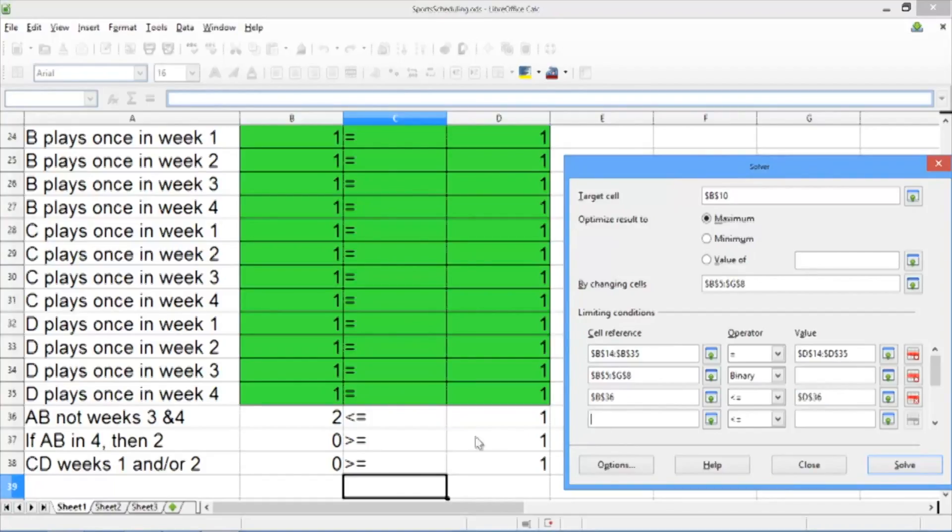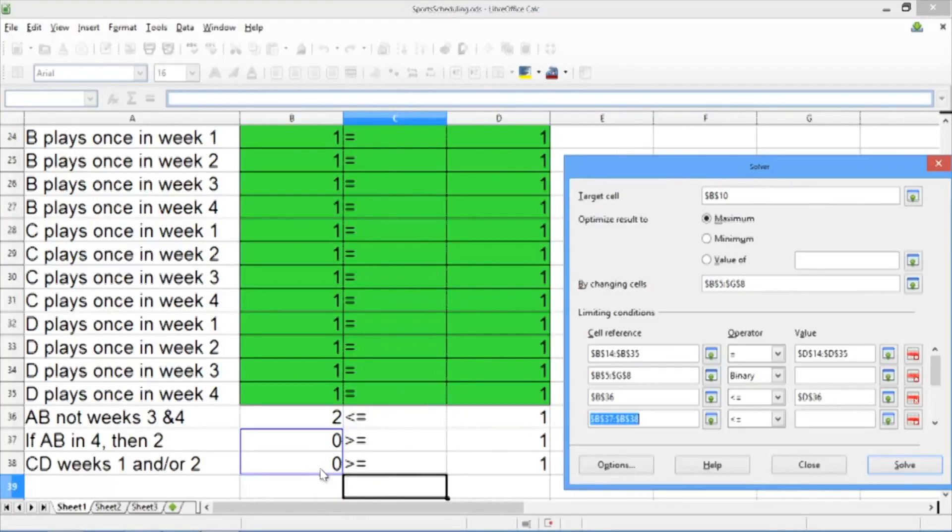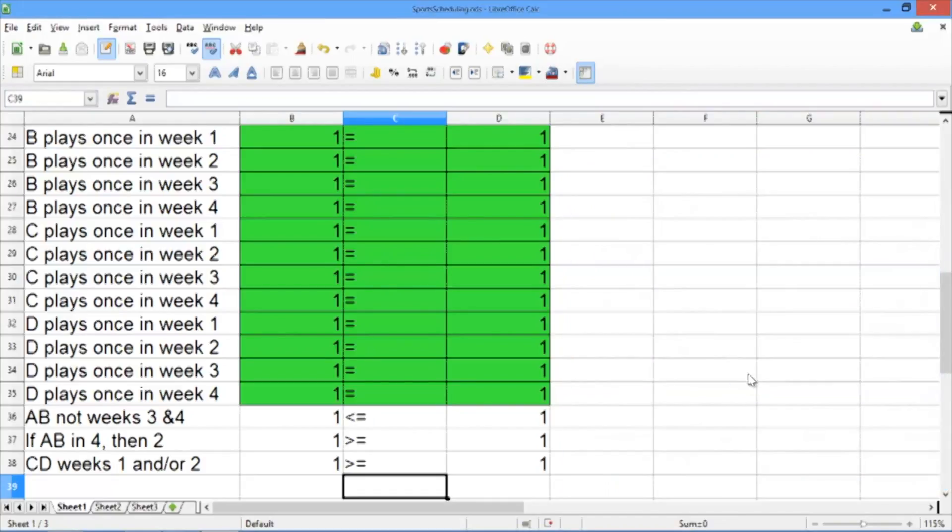Then in the fourth cell reference box, select both of the left-hand sides for the other constraints, because they're both greater than or equal to constraints, change the operator to greater than or equal to, and for the value, select the two right-hand sides. And go ahead and click Solve. The solving result says solving successfully finished, result 20. Select Keep Result.